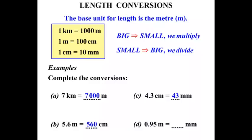Zero point nine five meters equals how many millimeters? Well meters to millimeters. What's the connection? Well on our table, we know a connection between meters and centimeters. And then we know a connection between centimeters and millimeters. But looks like we're going to take two steps for this one.